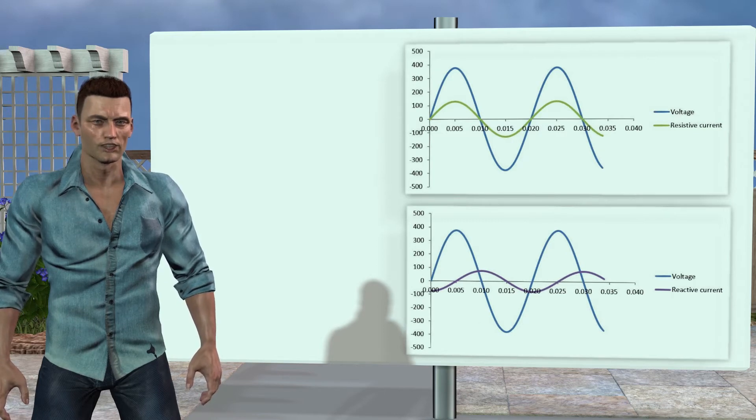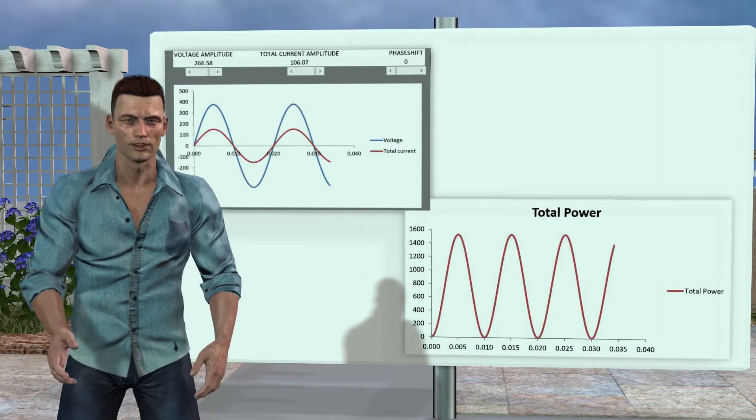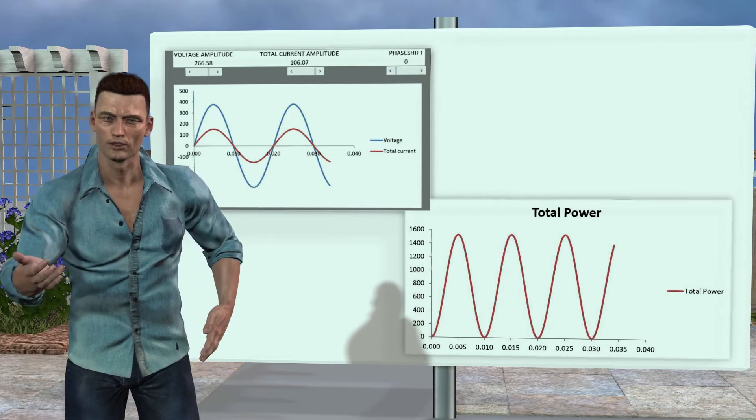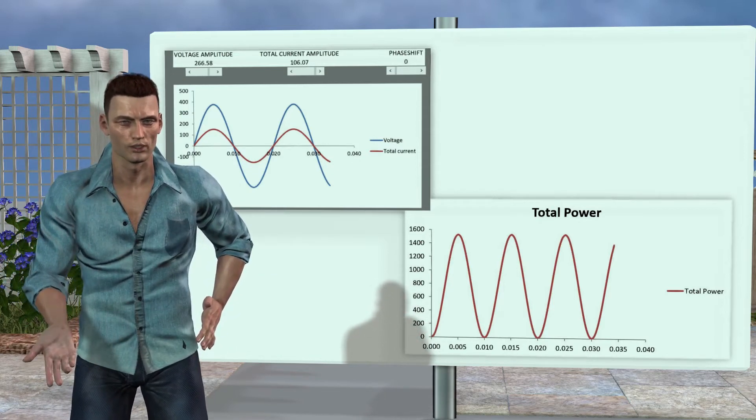Let us now see the graphs of the instantaneous power, which, as we have said, is calculated, simply multiplying voltage and current values for each instant.